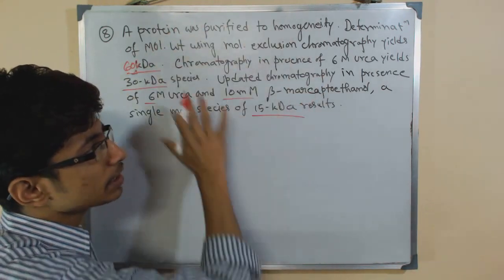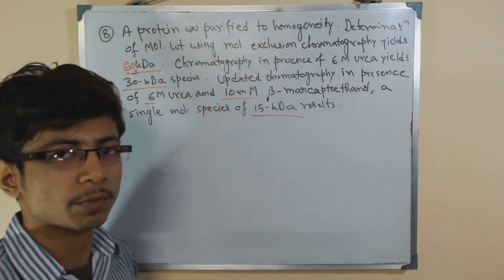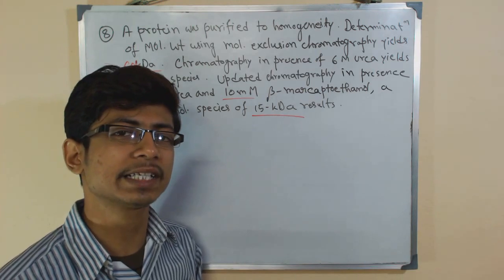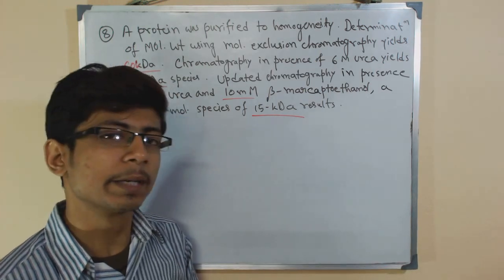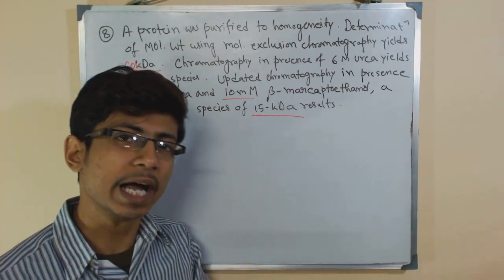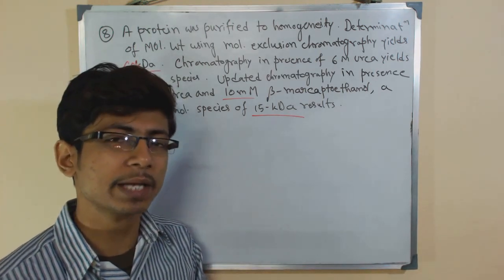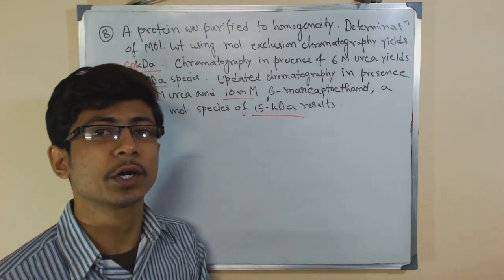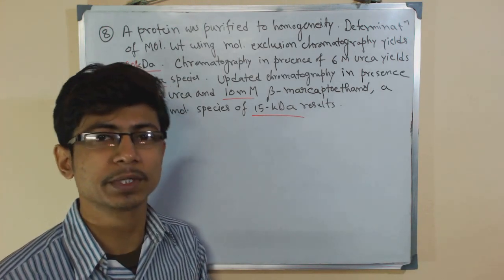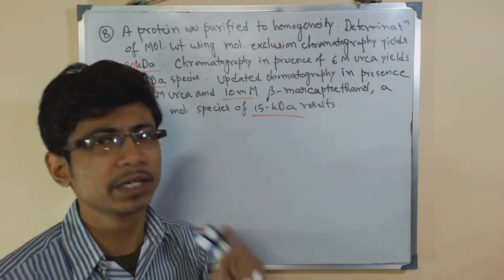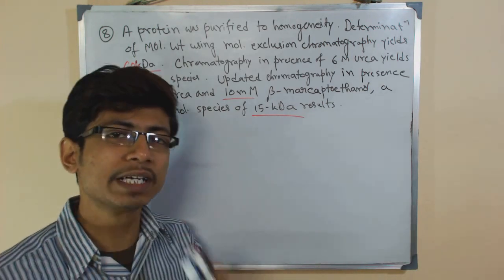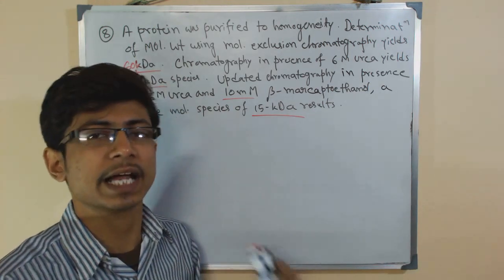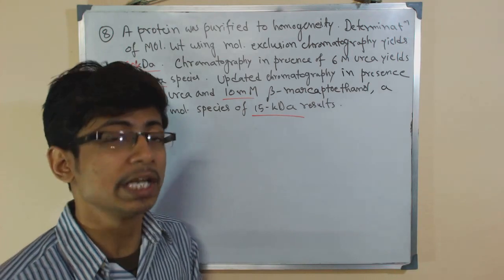Now, after knowing all this information, what we need to answer is: what exactly is the structural feature of the protein? That means whether it is a dimer, trimer, tetramer, homodimer, heterodimer, homotetramer, or whatever type of structure it is — and what is the molecular weight of each monomer of that protein.